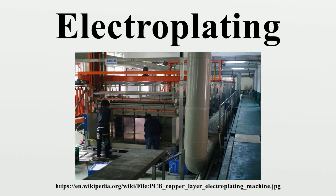Electroplating is widely used in various industries for coating metal objects with a thin layer of a different metal. The layer of metal deposited has some desired property which the metal of the object lacks. For example, chromium plating is done on many objects such as car parts, bath taps, kitchen gas burners, and wheel rims, for the fact that chromium is very corrosion-resistant and thus prolongs the life of the parts. Electroplating has wide usage in industries and is also used in making inexpensive jewelry. Electroplating increases the life of metal and prevents corrosion.